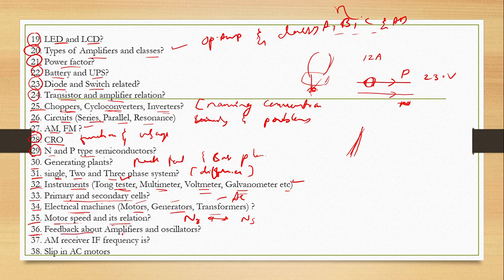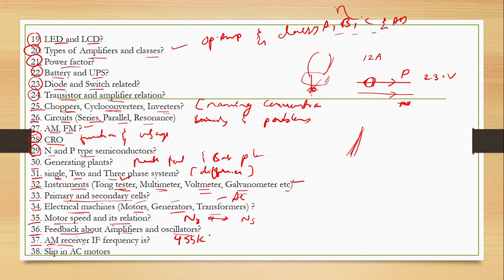Feedback about amplifiers and oscillators — amplifiers, feedback, and oscillators. And the AM receiver — amplitude modulation receiver. The IF frequency is 455 kHz. This is called the intermediate frequency. How will you call super heterodyne? An old receiver — super heterodyne. From the receiver, the frequency will generate.